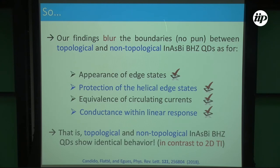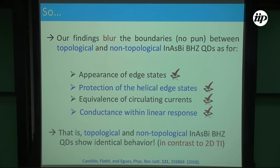So in this sense, we have a pun in our title: we say that we blur the boundaries between topological and non-topological phenomena, because both have edge states, both are protected, and the circulating currents are similar. The conductance is the same within linear response. This is all in contrast to 2D topological insulators where, if the system is trivial there are no edge states, and if the system is topological you have edge states at the boundaries. Here, in lower dimensions, it's not like that.